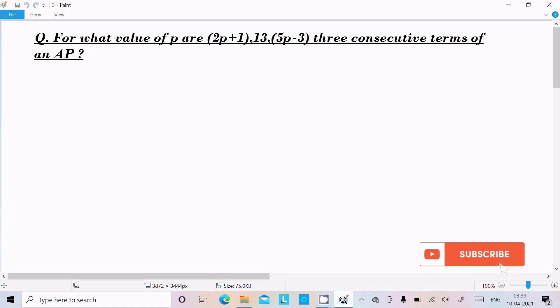Hello friends, in this video lecture I'm going to find the value of p. Here the given is 2p plus 1, 13, 5p minus 3, three consecutive terms of an AP. So let's see the answer.